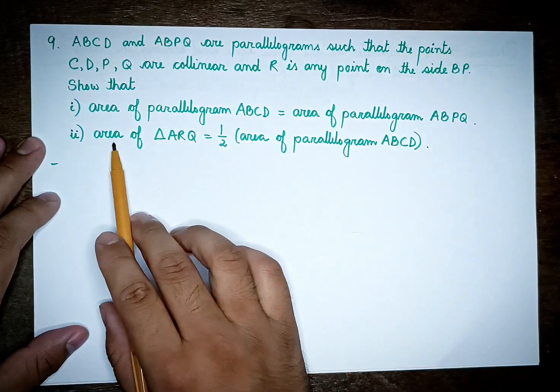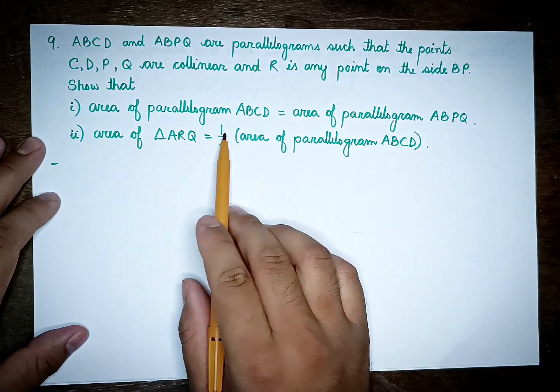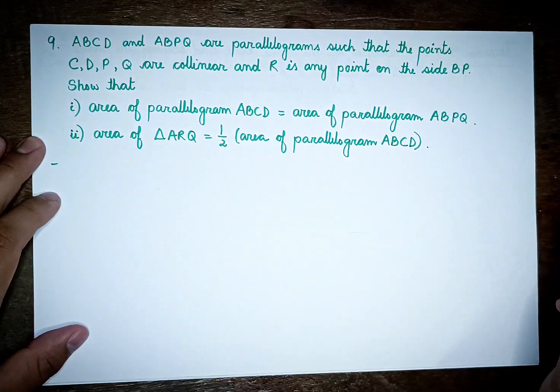We need to show that the area of parallelogram ABCD equals the area of parallelogram ABPQ, and the area of triangle ARQ equals half the area of parallelogram ABCD.